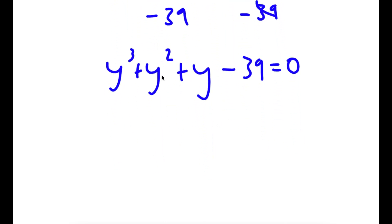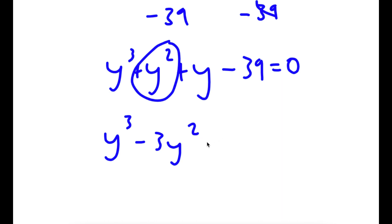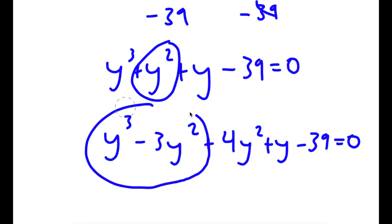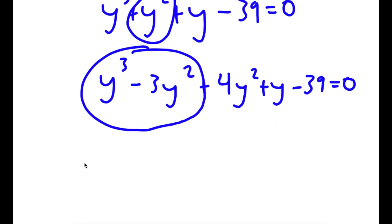Now I'm going to rewrite y squared here as negative 3y squared plus 4y squared. So I have y to the power of 3 minus 3y squared plus 4y squared plus y minus 39 is equal to 0. From y to the power of 3 minus 3y squared, I can factor out y squared, giving y squared times y minus 3.